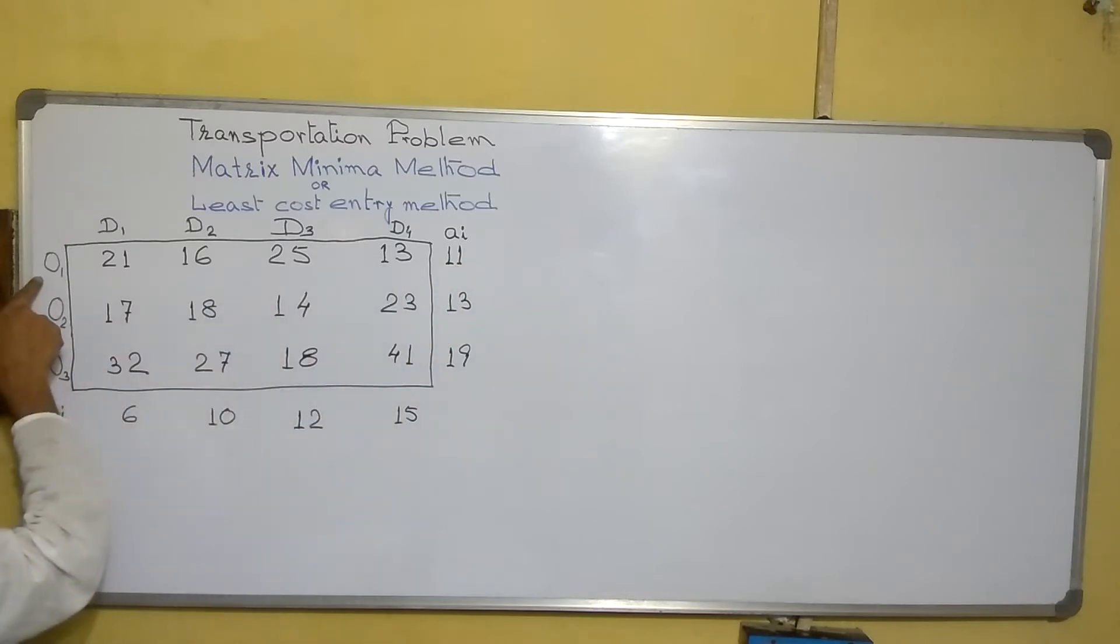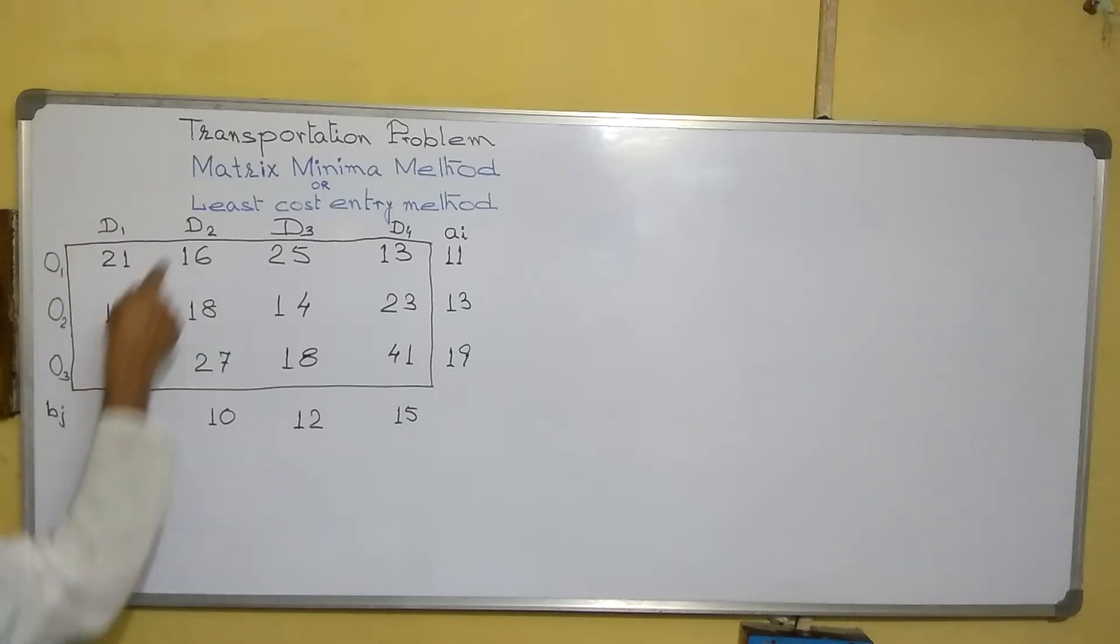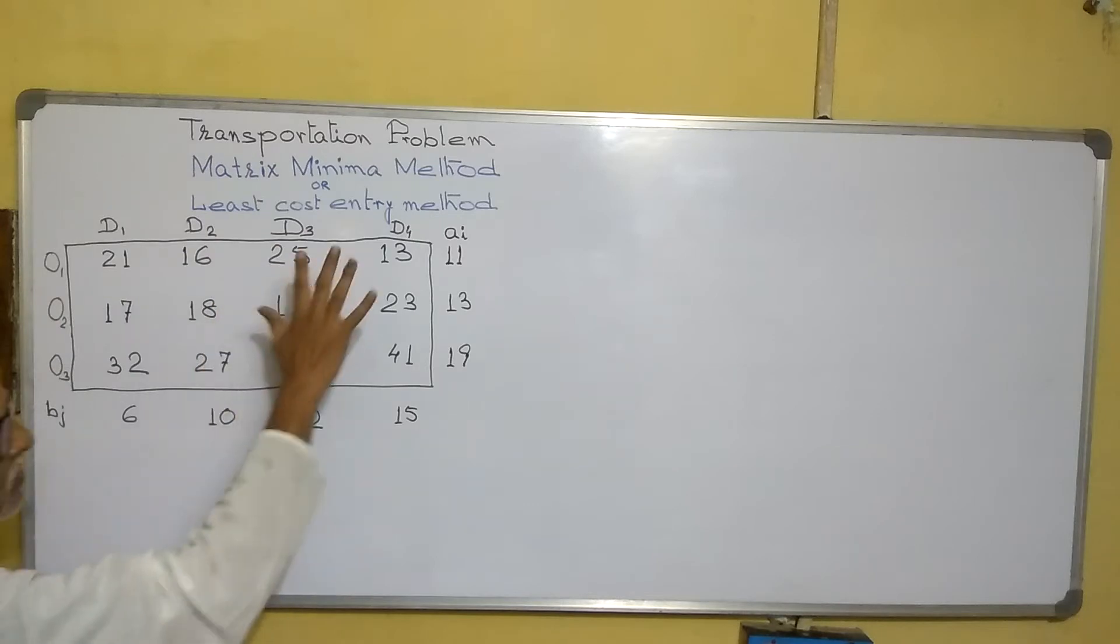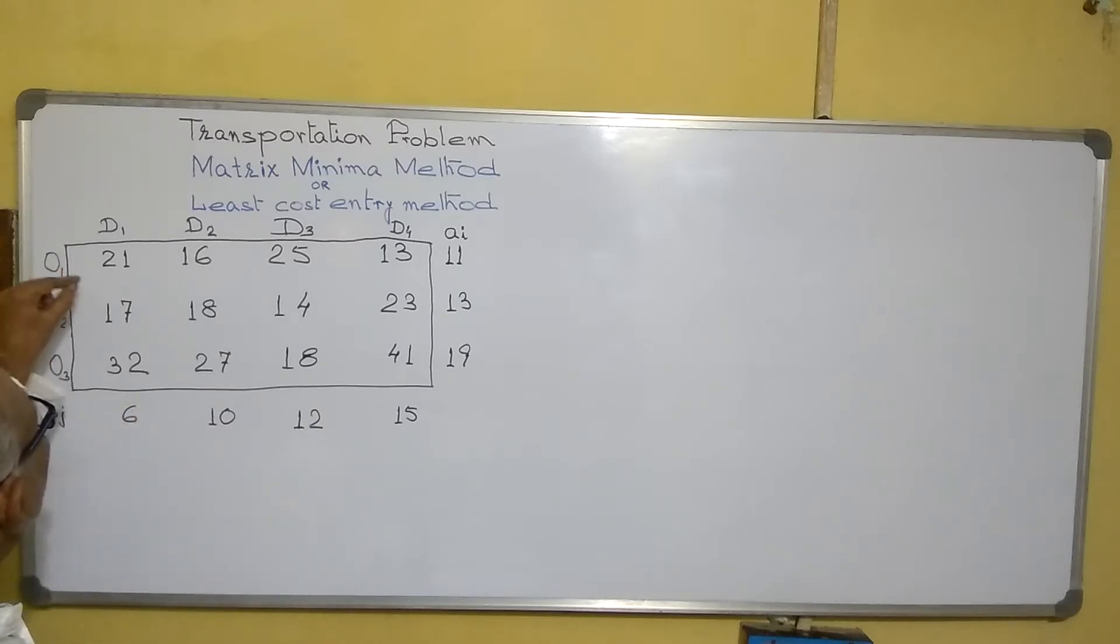This is available stock in first origin, this is available stock in second, and so on. This is the requirement in destination 1, destination 2, etc. These are supplied as cost per unit. Suppose we want to supply origin 1 to destination 1, cost per unit will be 21.